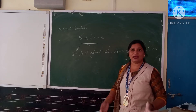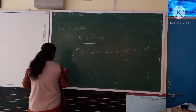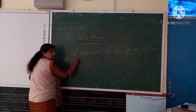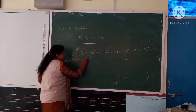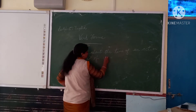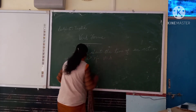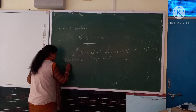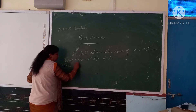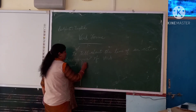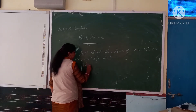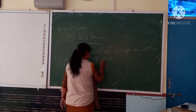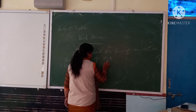First, let us discuss about the word forms and how we have to learn them. There are three forms of a verb. The first one is present, the second one is past, and the third one is past participle.